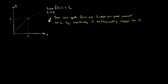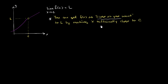In the last video, we tried to come up with a somewhat rigorous definition of what a limit is, where we say that the limit of f of x as x approaches c is equal to l. You're really saying that you can get f of x as close as you want to l by making x sufficiently close to c.